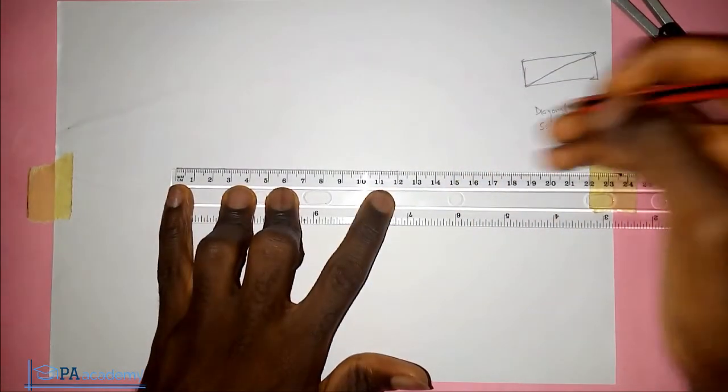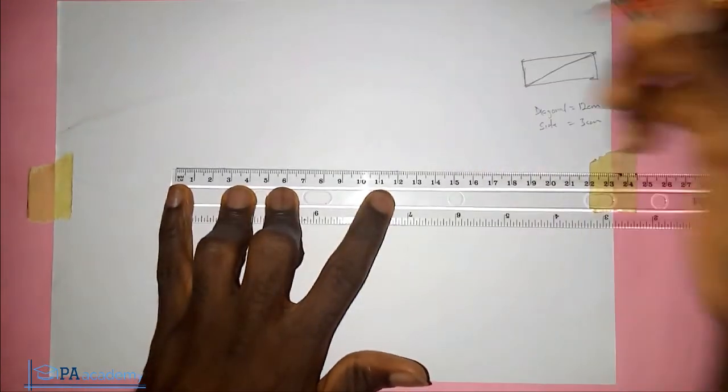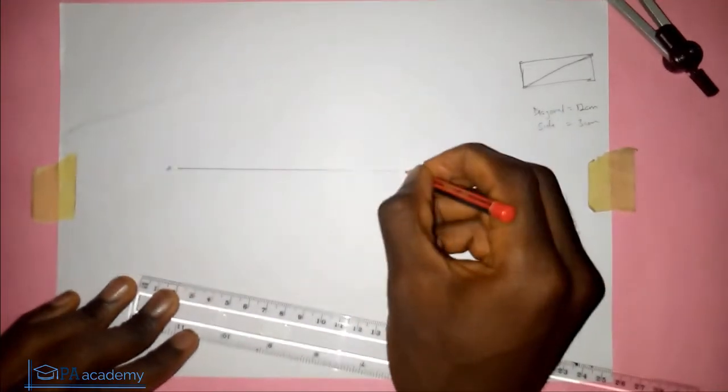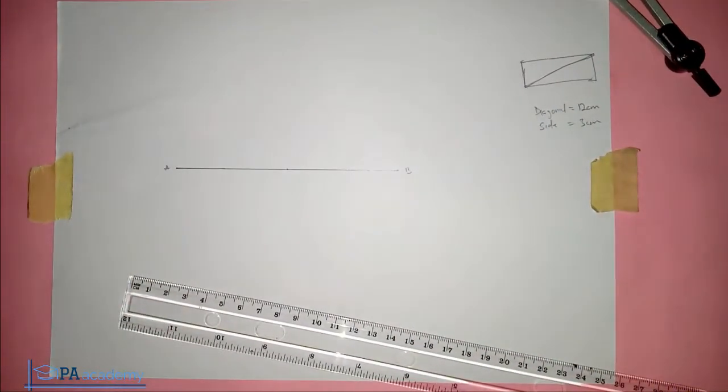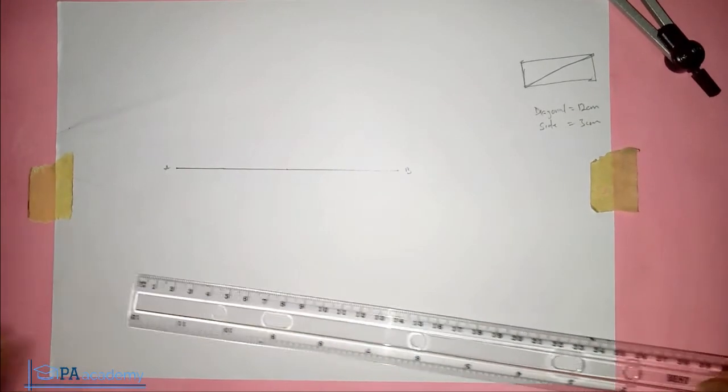So this is 12 cm. Let me also mark the center because we are also going to be drawing a circle around it. So this is AB. So that represents the diagonal of 12 cm.